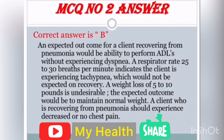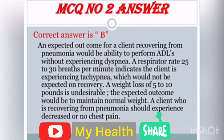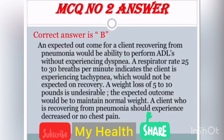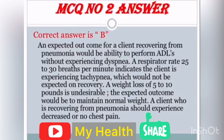The correct answer for MCQ number 2 is Option B — the ability to perform ADLs without experiencing dyspnea. A respiratory rate of 25–30 breaths per minute indicates the client is experiencing tachypnea in pneumonia, which would not be expected on recovery. A weight loss of 5–10 pounds is undesirable; an expected outcome would be to maintain normal weight. A client recovering from pneumonia should experience decreased or no chest pain.